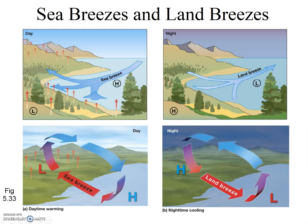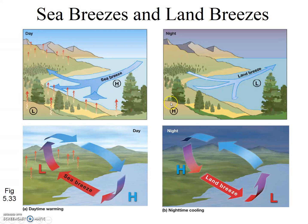We can contrast that with a land breeze. At night, the land cools down faster and to a greater extent than the water, creating a higher pressure situation on the land than over the water. The winds reverse, and we have wind flowing from the land towards the water at night.